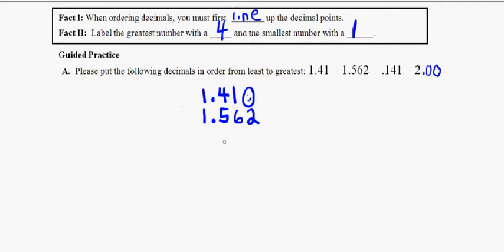We have 0.141. So again we put the decimal point down first. 0.141 and then here we'll put our smiley face again.